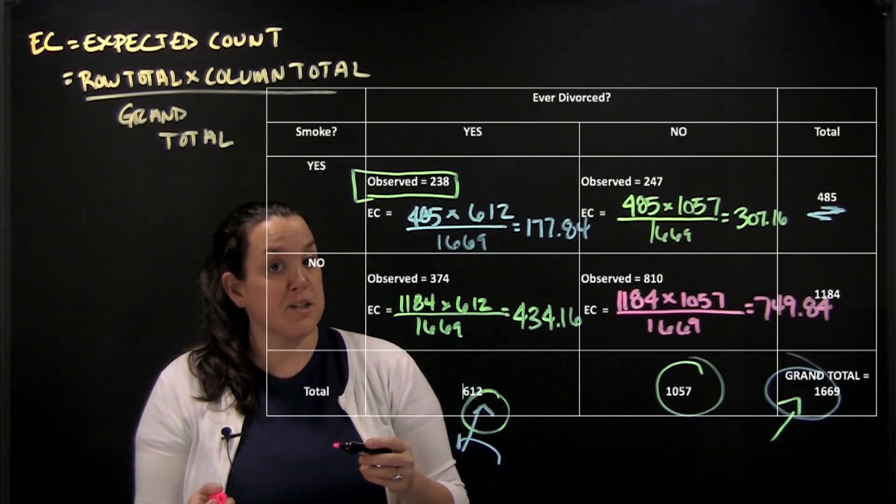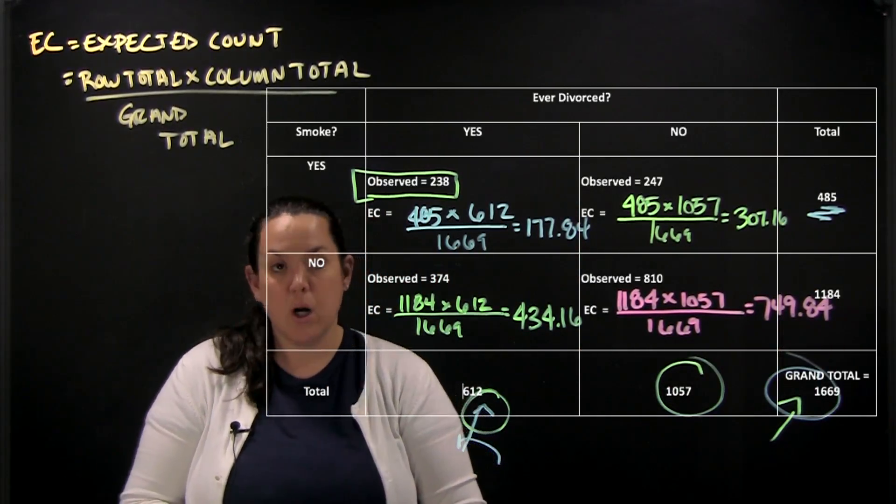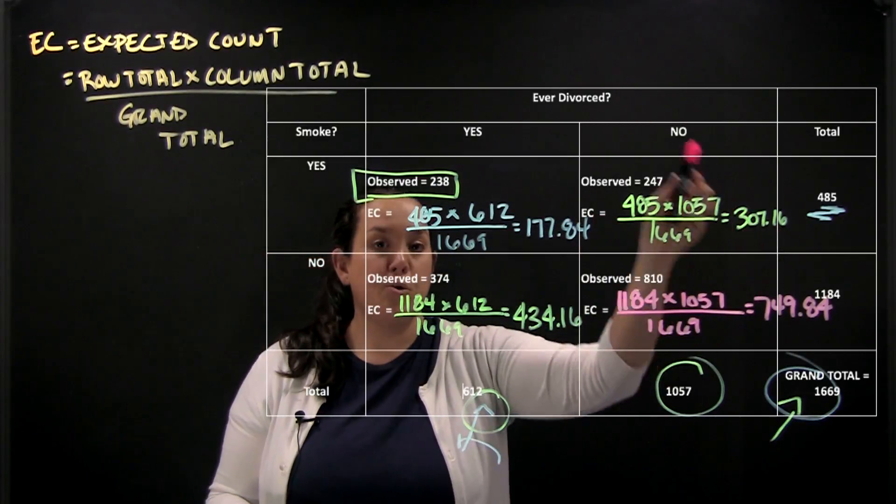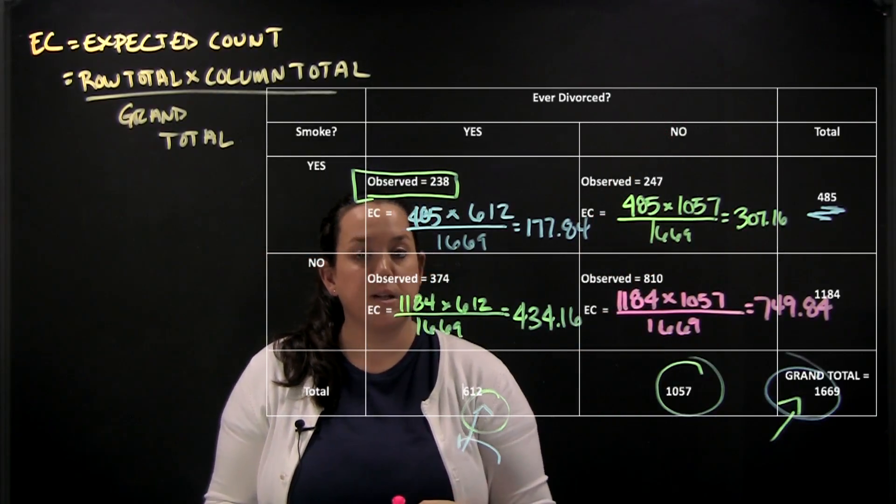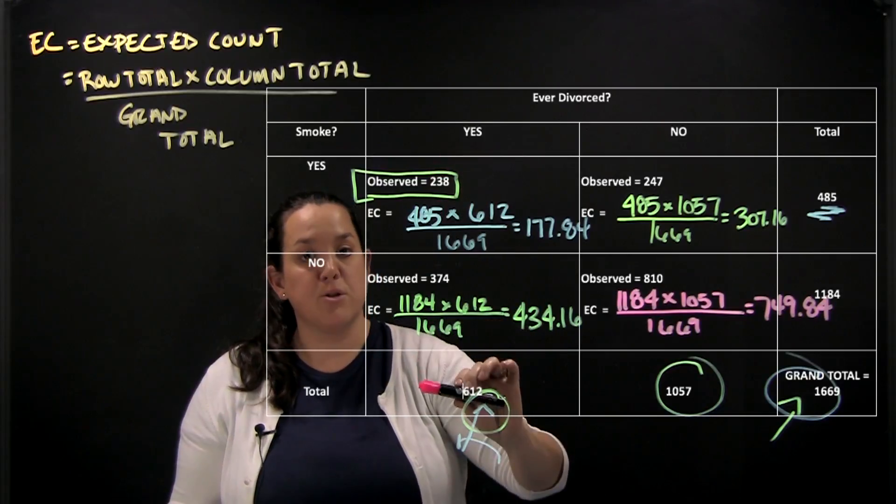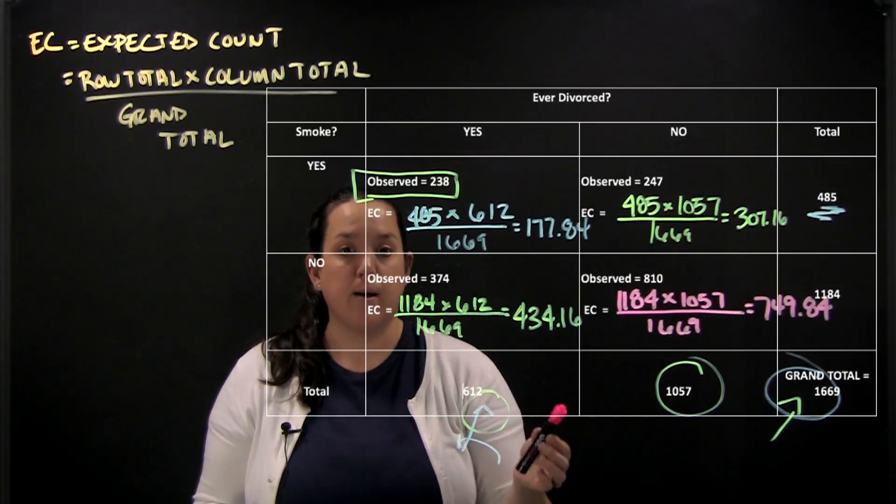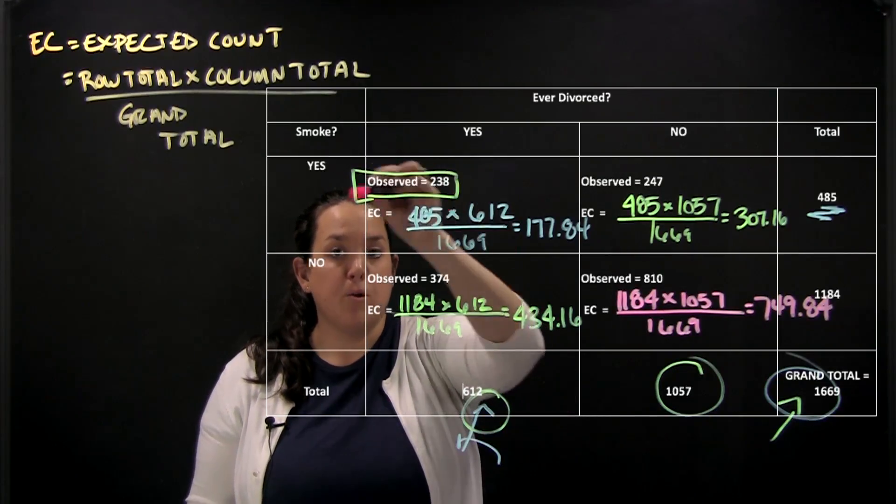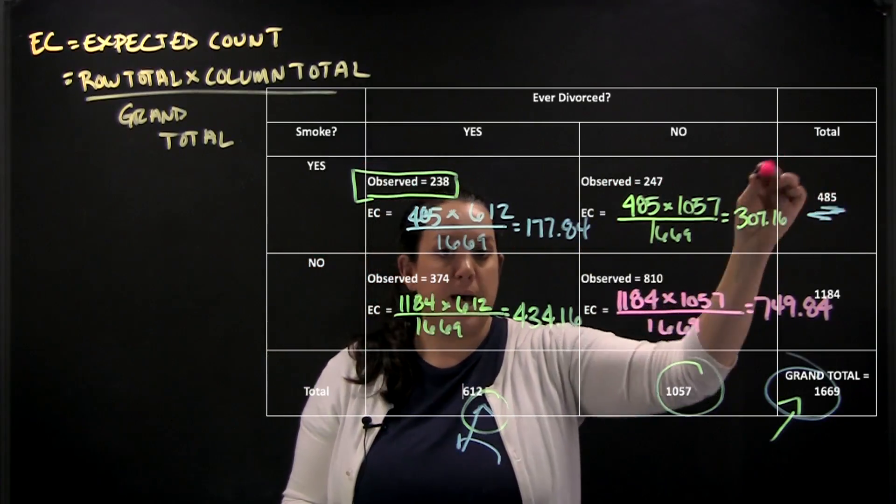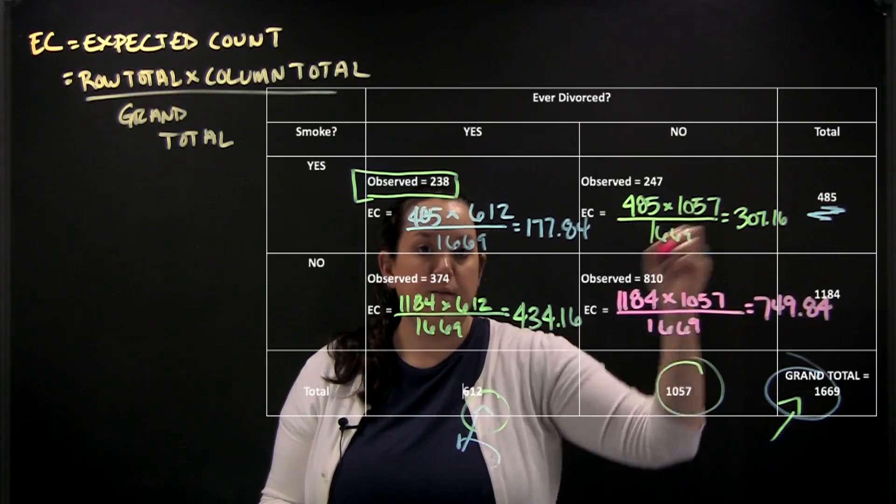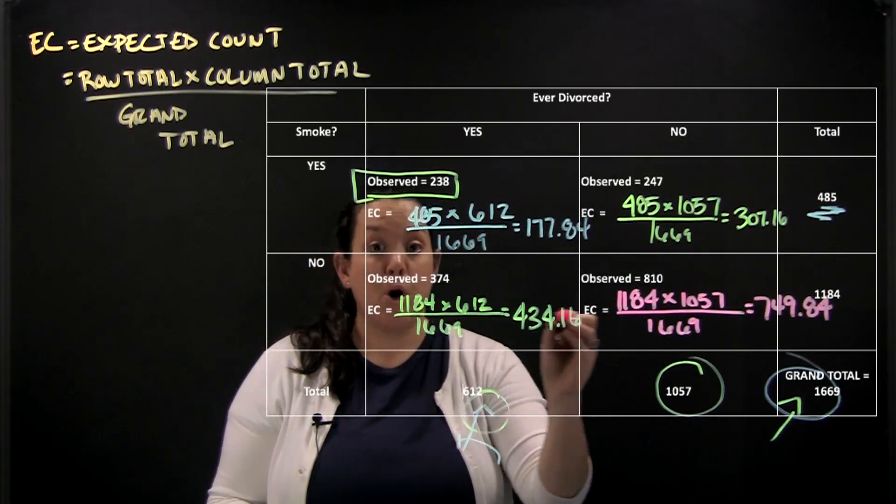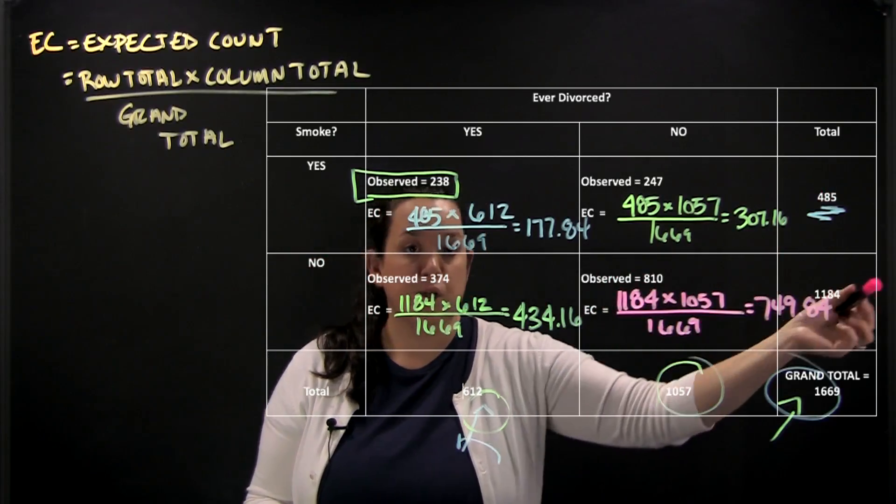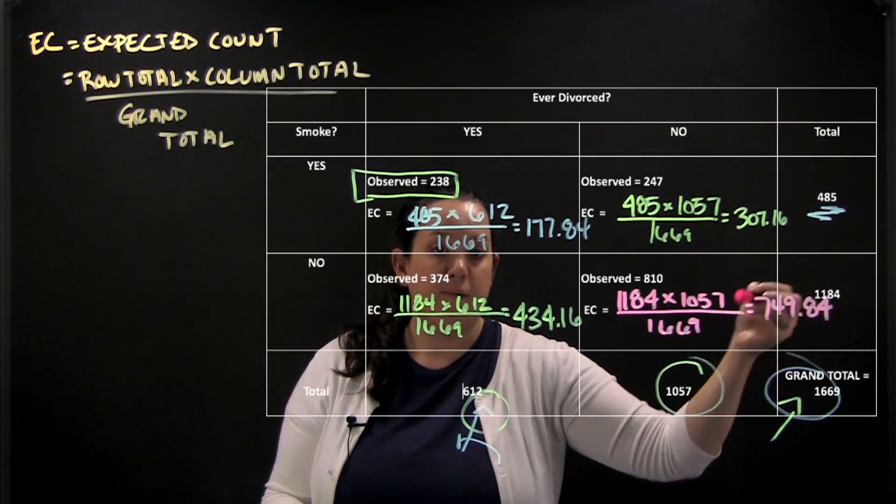So the nice thing about expected counts is you can actually check your work. The corresponding rows or columns for the expected counts need to add up to the total for that row or that column. So here these two values should add up to 612. If I were looking at the yes row they need to add up to the total 485. If I were looking at the no row these two expected counts should add up to the total 1184.